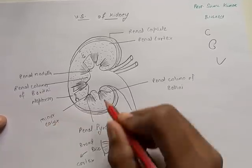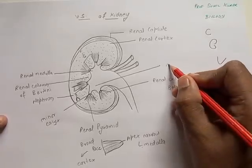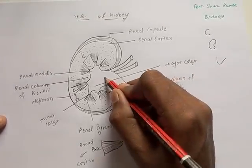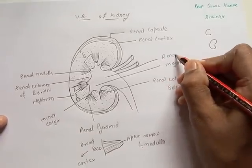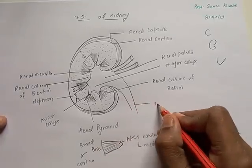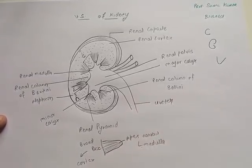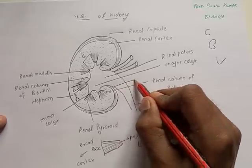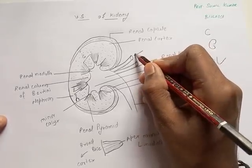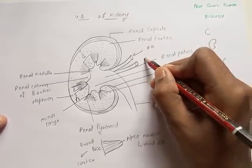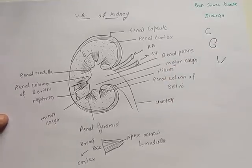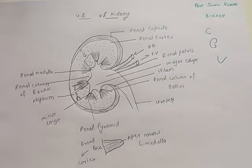There are small openings called minor calyx. Two or three minor calyces join together to form a major calyx. The major calyx opens into a space called the renal pelvis, which gives rise to a tube called the ureter. There is a notch in the kidney called the hilum, which is the entry point for the renal artery and renal vein. This completes the VS of kidney.